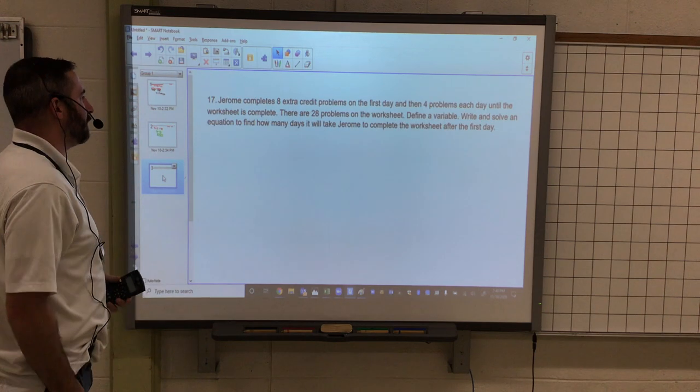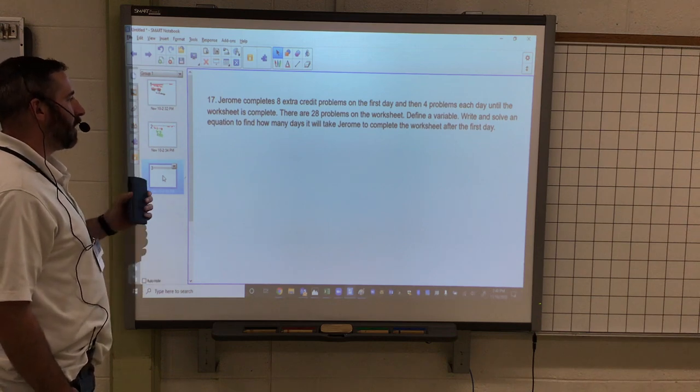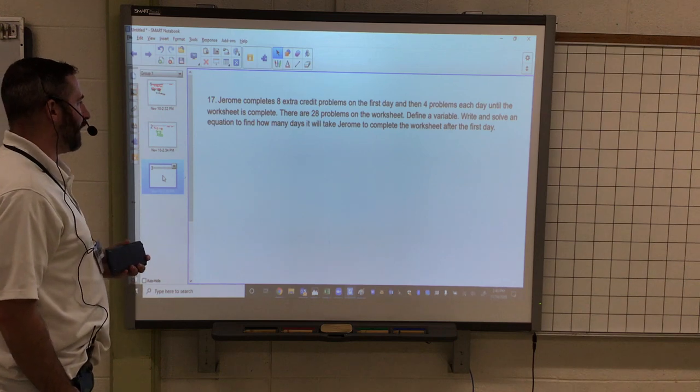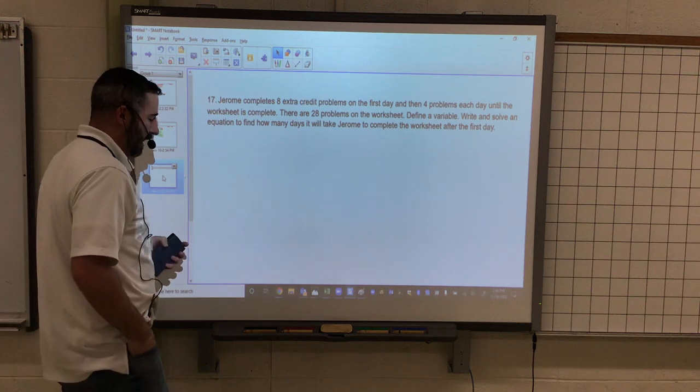17: Jerome completes 8 extra credit problems on the first day, then 4 problems each day until the worksheet is complete. There are 28 problems on the worksheet. Define a variable, write and solve an equation to find how many days it will take Jerome to complete the worksheet after the first day.